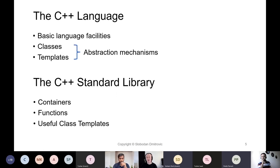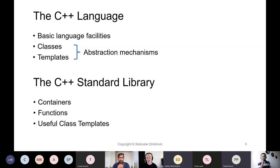Let's look at all three bullet points in greater detail. What makes up the C++ programming language? There are basic language facilities, and there are abstraction mechanisms within the language. Those abstraction mechanisms are classes and templates. We should learn about the basics first, and then move on to abstraction mechanisms such as classes and templates.